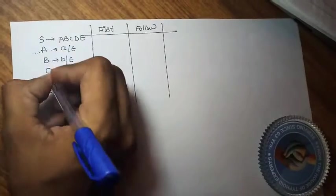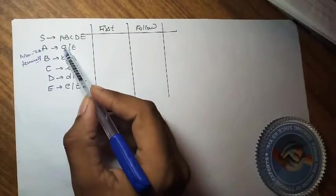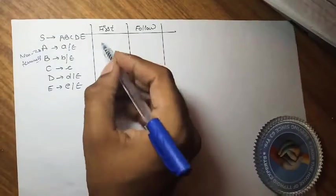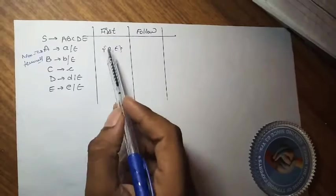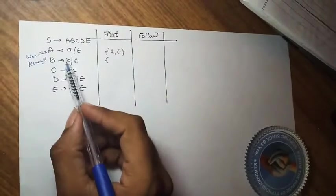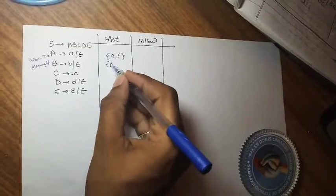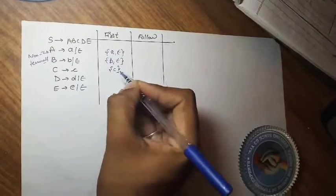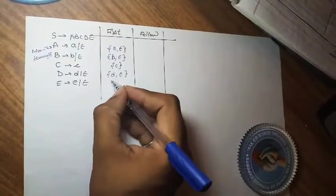First, let's find FIRST for each non-terminal. For non-terminal A, its productions give us small a and epsilon, so FIRST(A) = {a, ε}. For non-terminal B, FIRST(B) = {b, ε}. For C, FIRST(C) = {c}. For capital D, its productions give small d and epsilon, so FIRST(D) = {d, ε}. For E, FIRST(E) = {e, ε}.